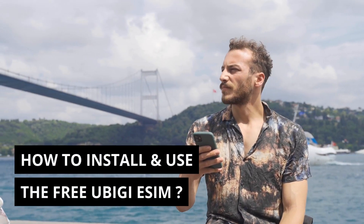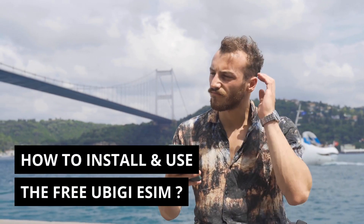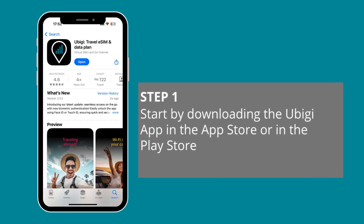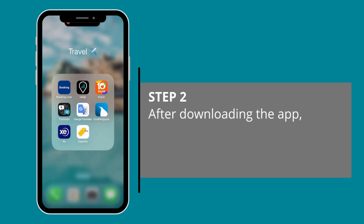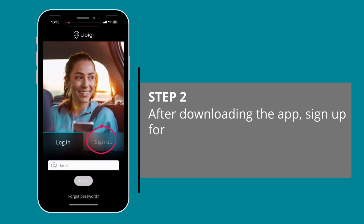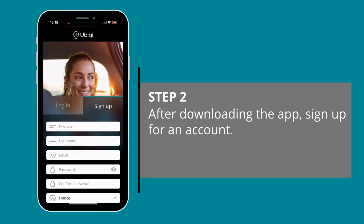How to install and use the free Ubiji eSIM. Start by downloading the Ubiji app in the App Store or in the Play Store. After downloading the app, sign up for an account.